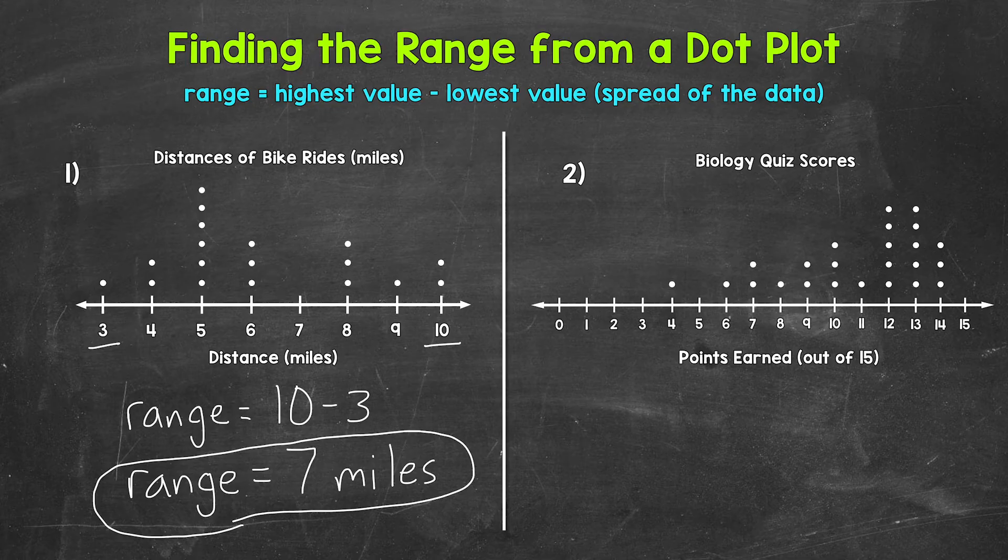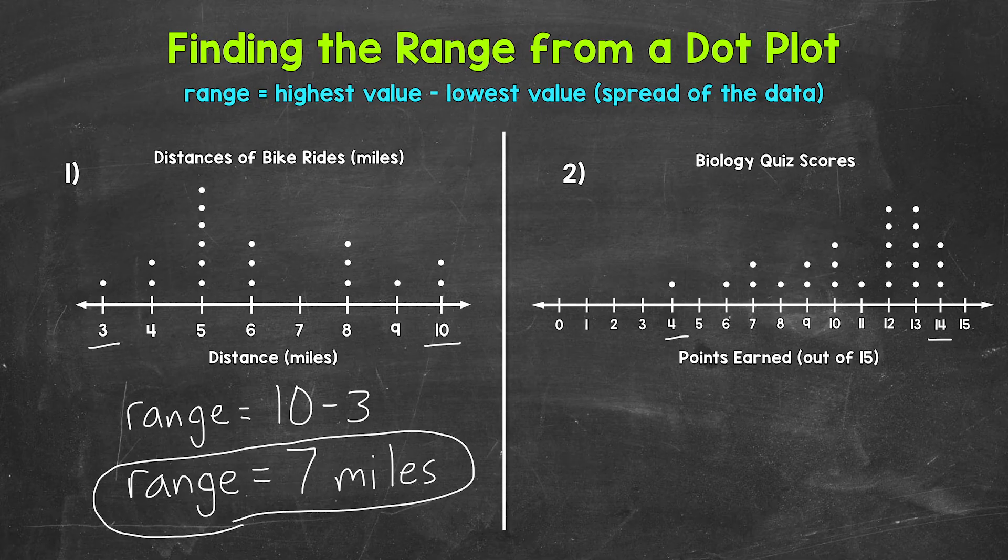Don't just do 15 minus zero. Our highest value or highest score is 14. The lowest value or lowest score is four. Those are the highest and lowest values. Any number on the number line without any dots above it means those values did not show up within the data.